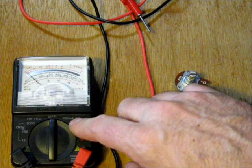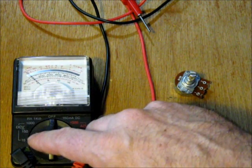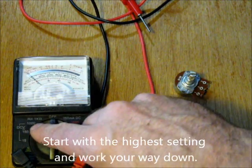First, turn on your meter to the resistance setting. Most meters have multiple ranges, but this one only has one.